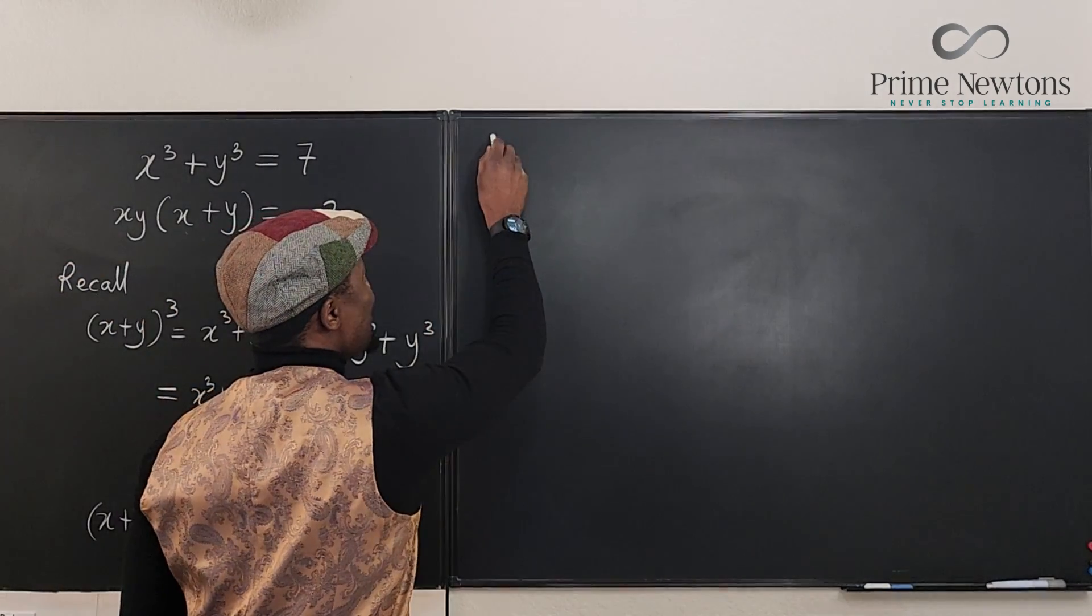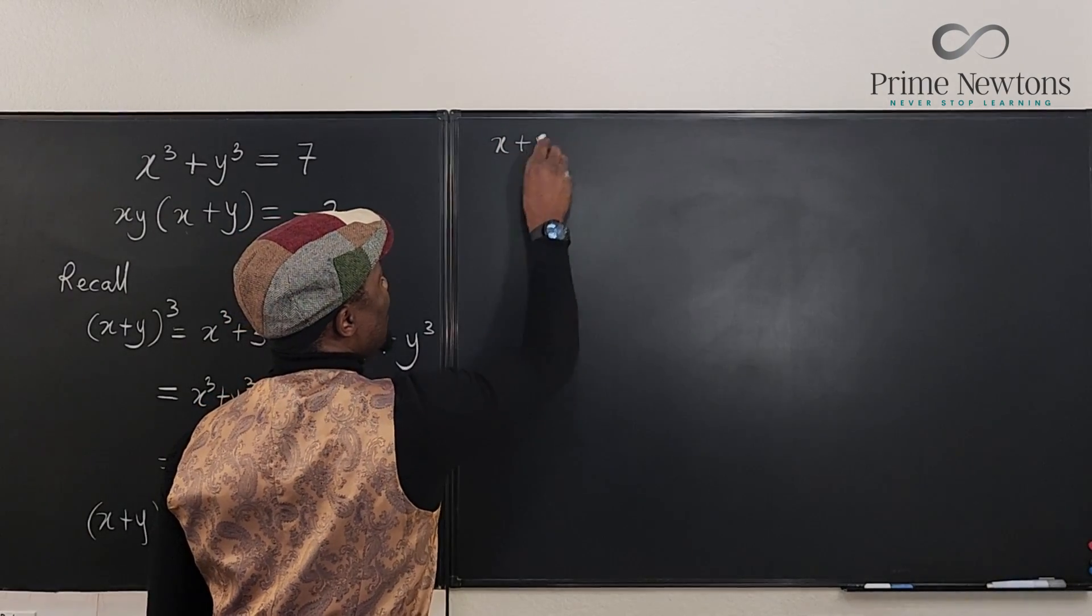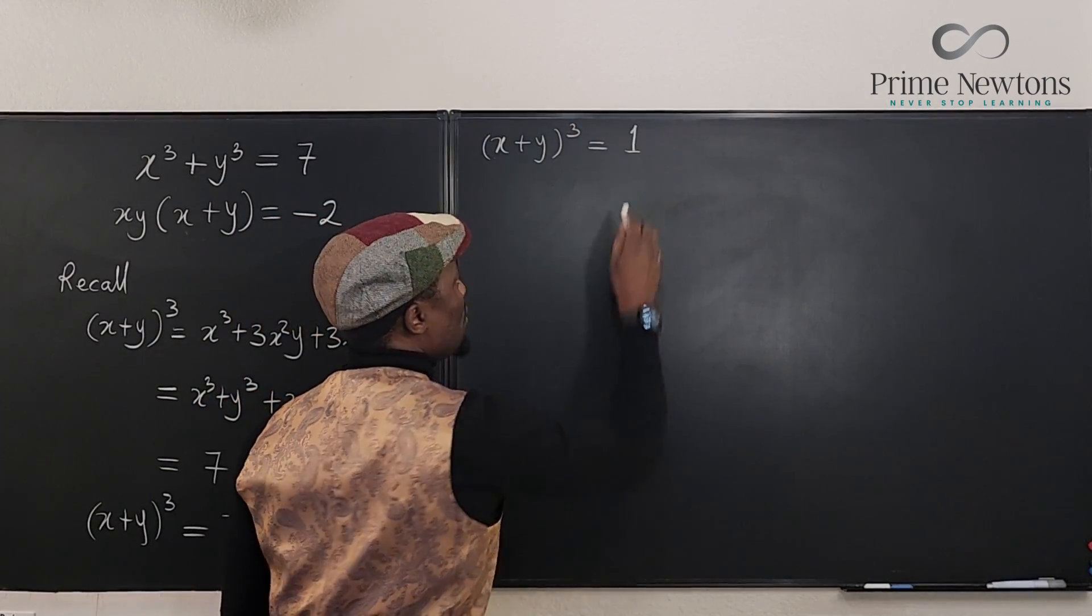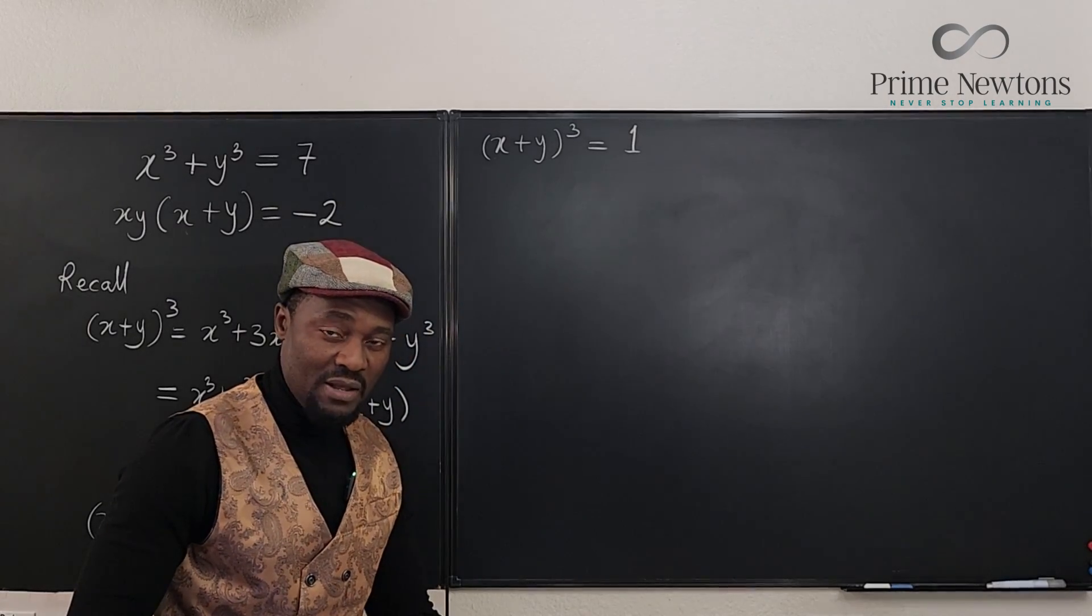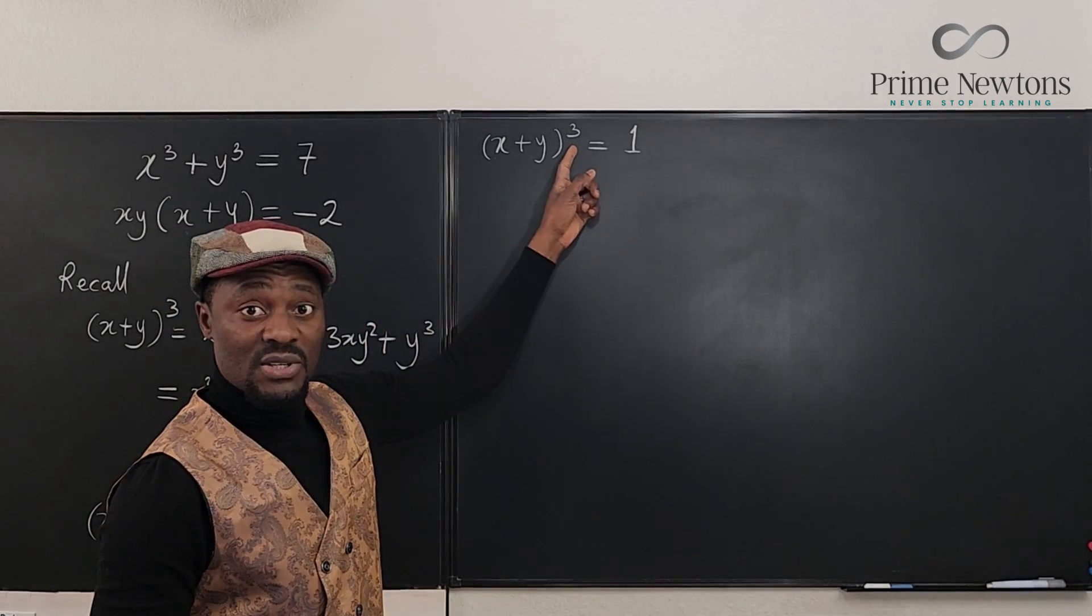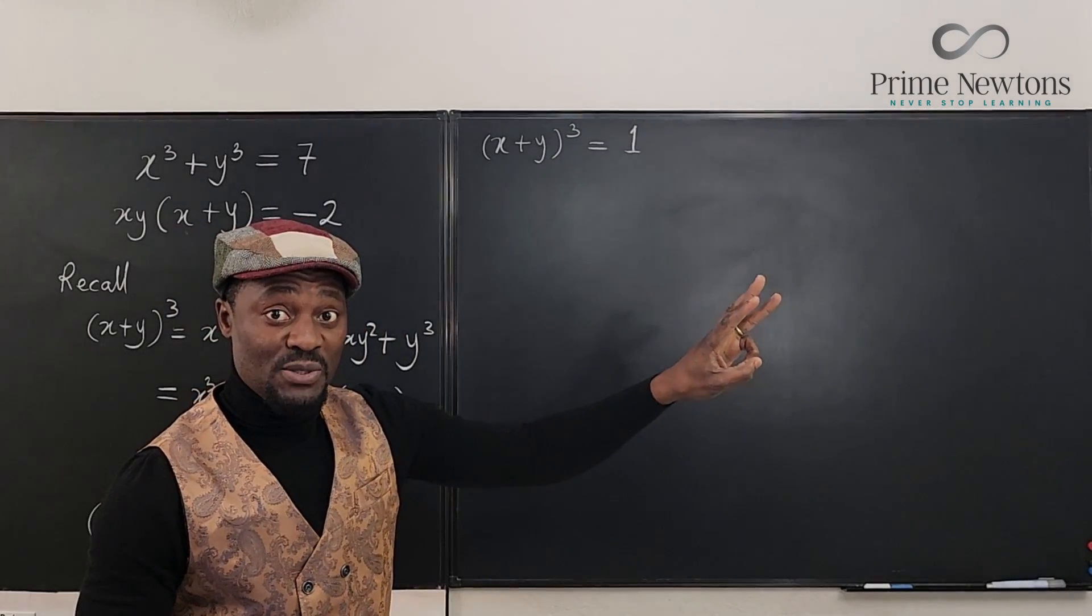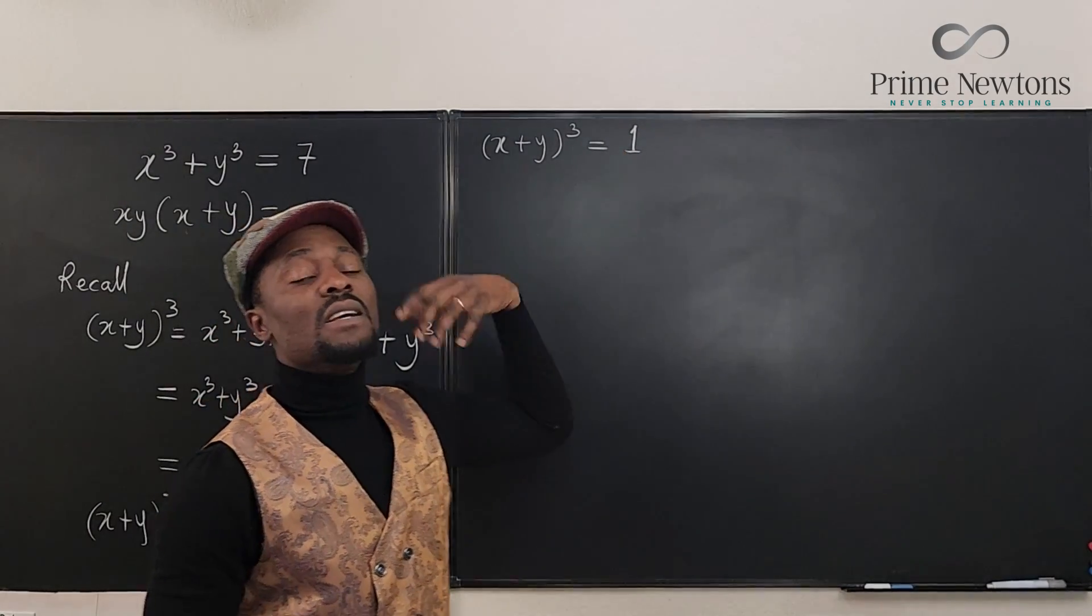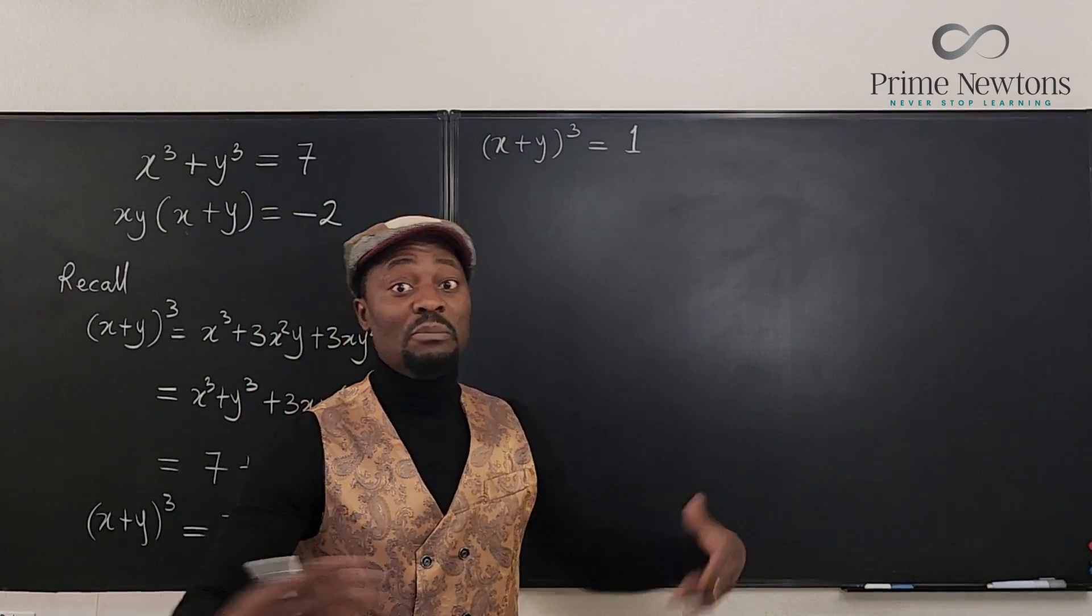So you come here and you go, (x + y) cubed is equal to 1. So what exactly is x plus y? Well, remember because this is a cube, there are 3 possible solutions: 1 real solution and 2 complex solutions.